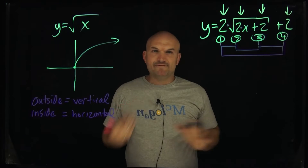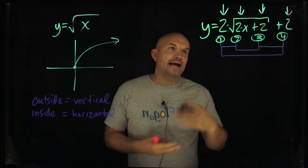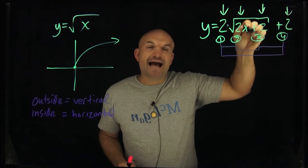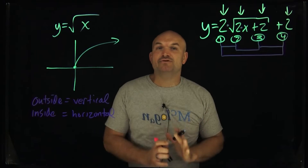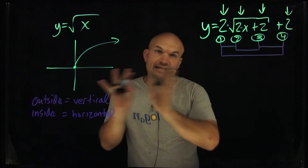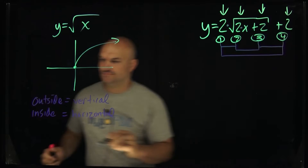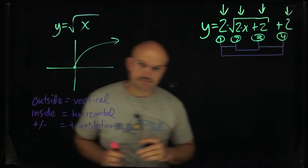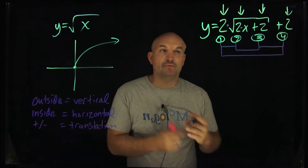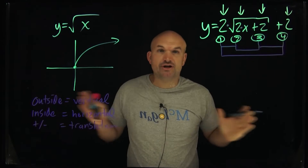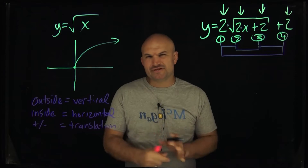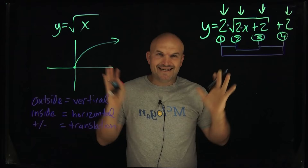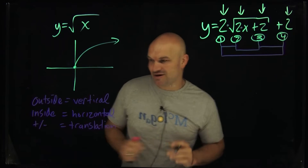Now we need to understand the difference between adding or subtracting versus multiplication or division. If we're adding or subtracting, that is going to be a shift — a translation of the graph. If we're multiplying, that is going to be a compression or a stretch. If it's less than one, you can think of it as a compression; either way it's a compression or a stretch.